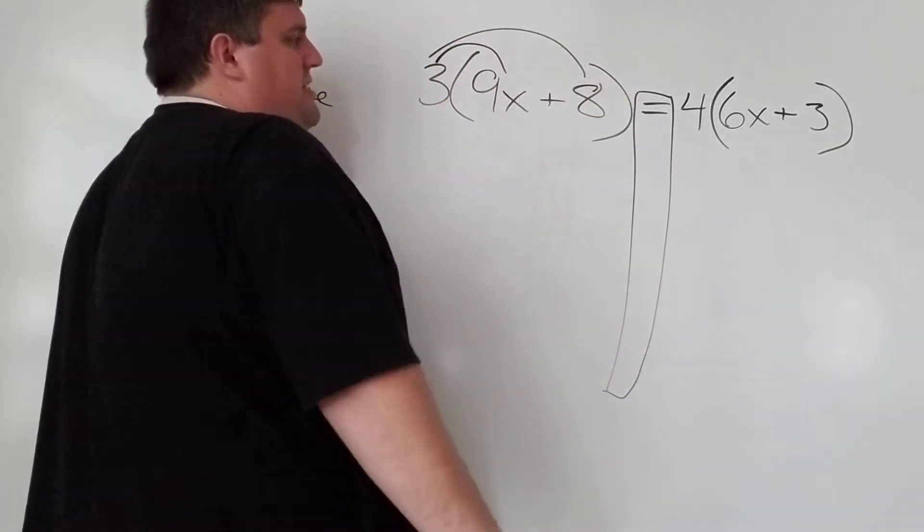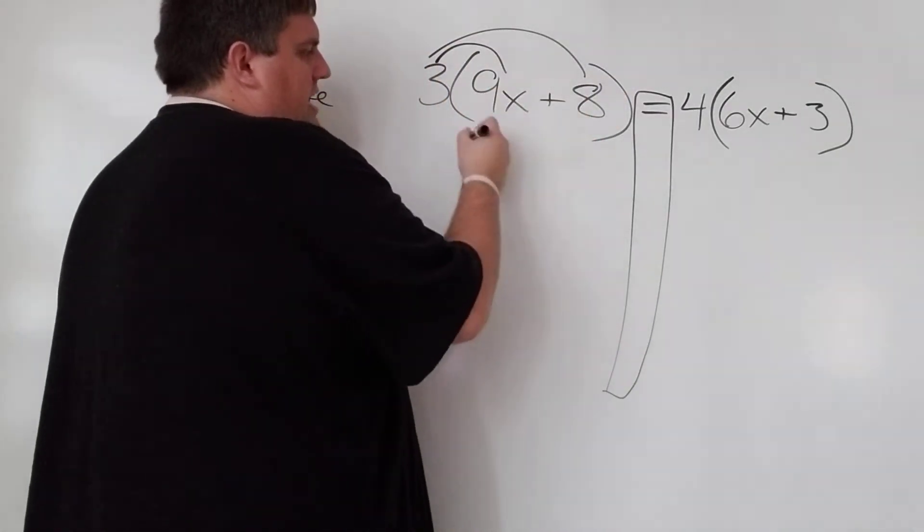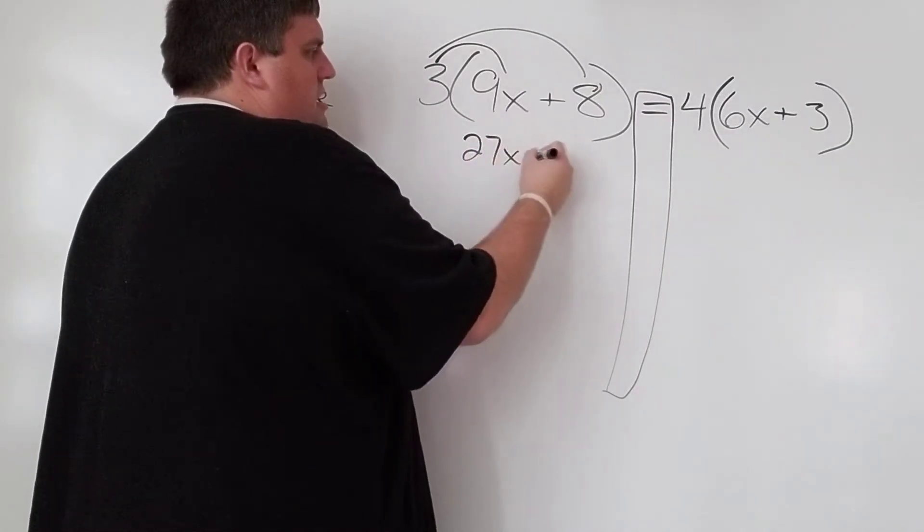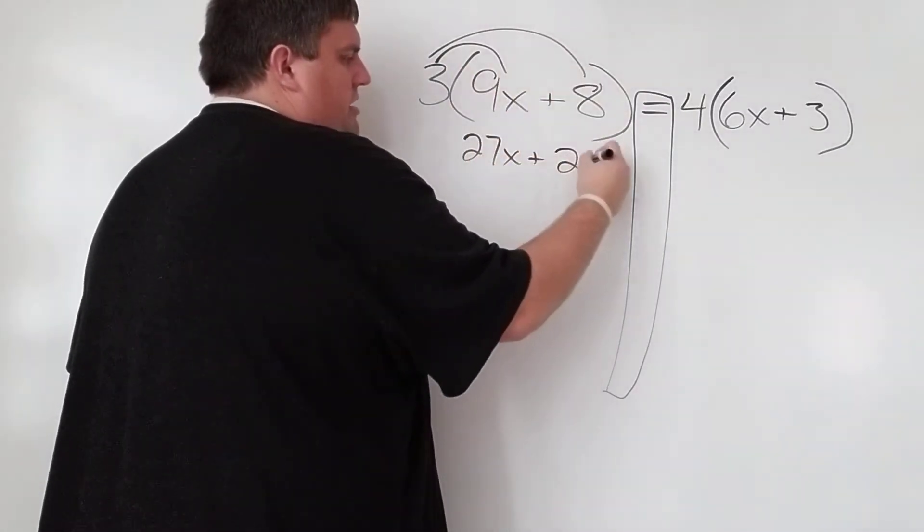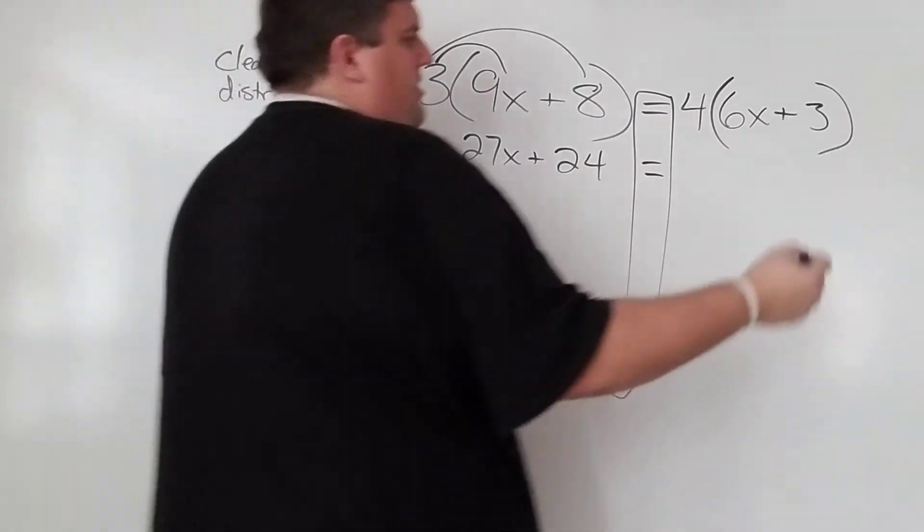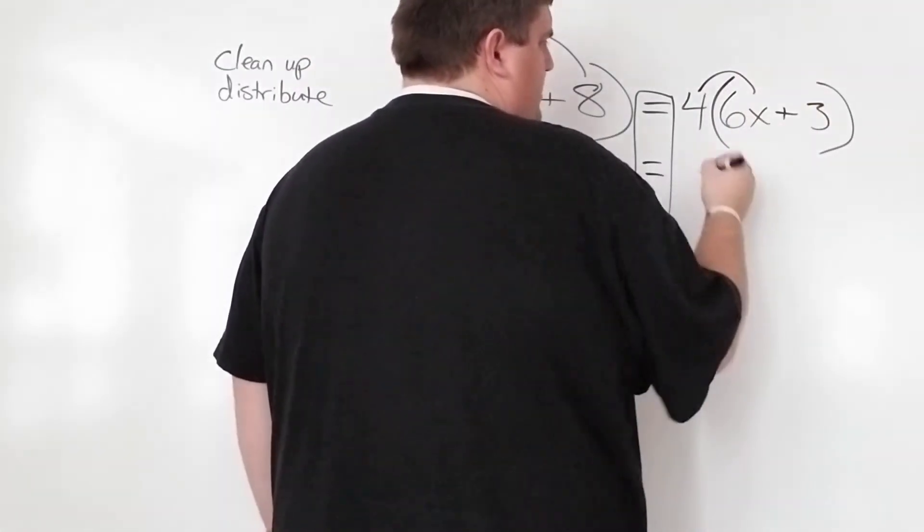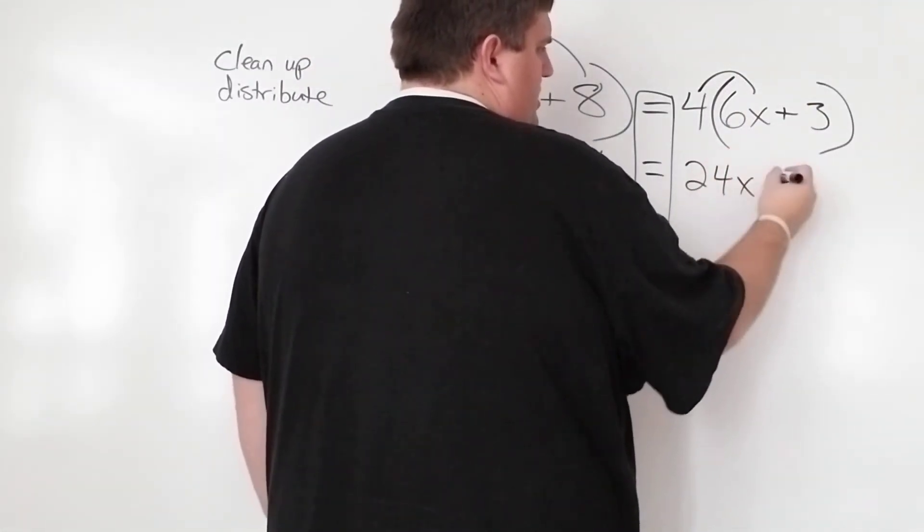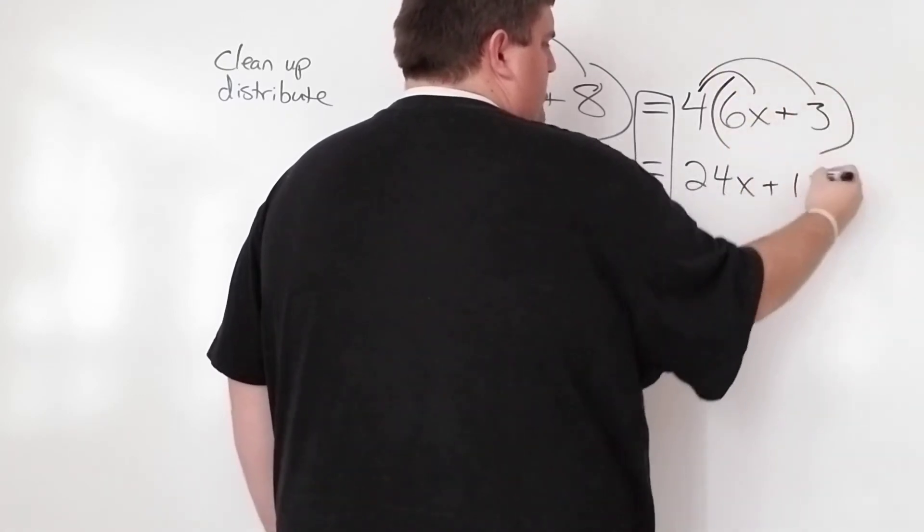So over here, I'm going to do 3 times this stuff. 3 times 9x is 27x. 3 times 8 is 24. On this side, we're going to do 4 times 6x, which is 24x. And 4 times 3, which is 12.